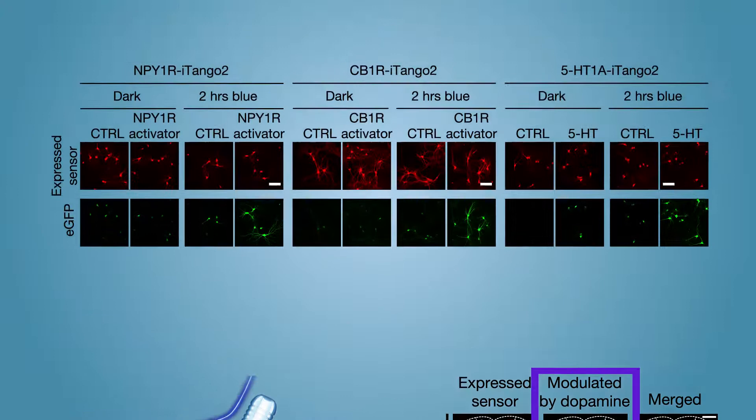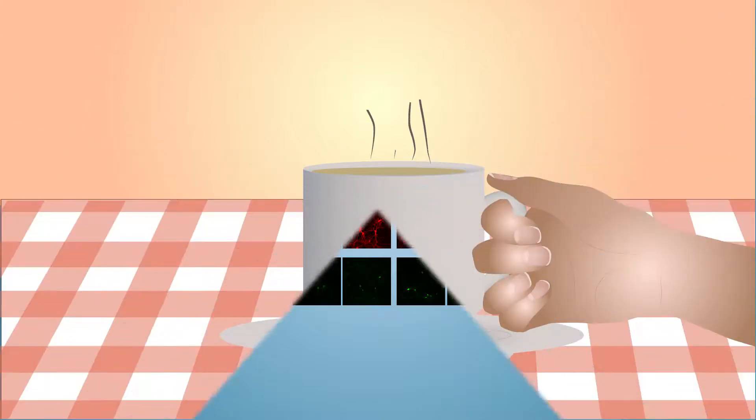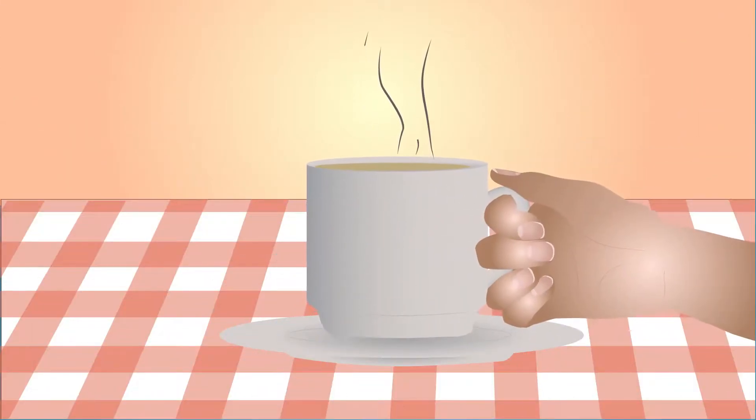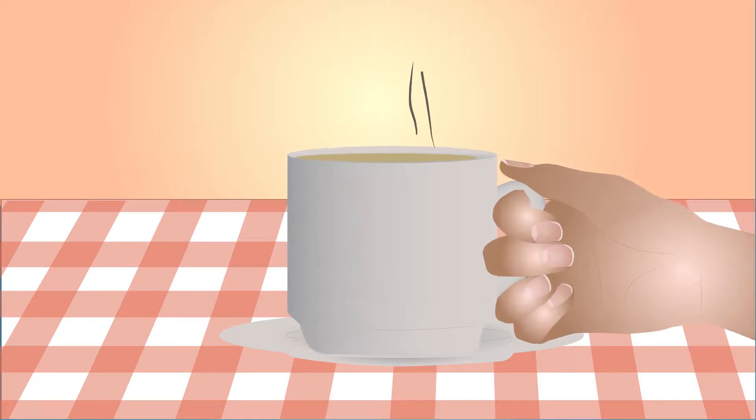The scientists also made improved sensors for other neuromodulators, like serotonin. This arsenal of improved sensors will likely provide considerable insight into how neuromodulators shape behavior, including in addiction and mood disorders.